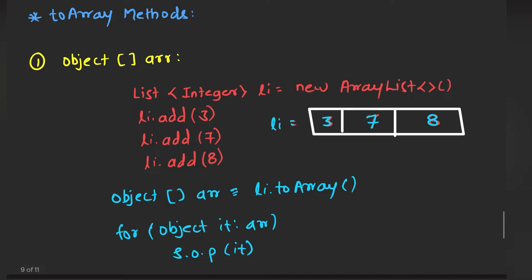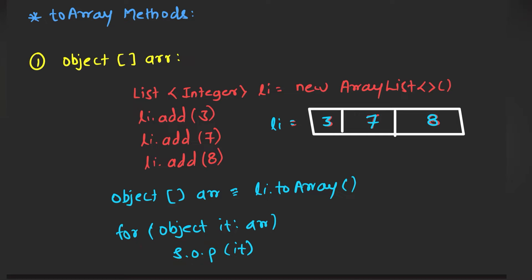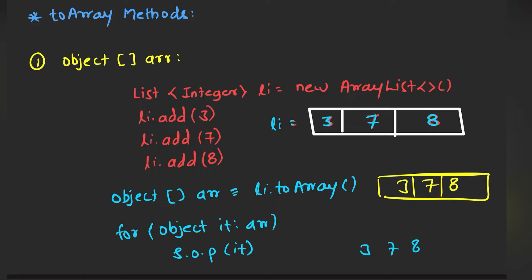Basically what I'm doing is converting this list into my array. But since my list is having objects, my array will contain an object data type. This is the reason why I have declared a data type called Object — this list is getting converted into my object array. This is the data type and name of my array. So my output will be 3, 7, and 8. The list name is li, and toArray is the inbuilt function used to convert this collection into my object array.